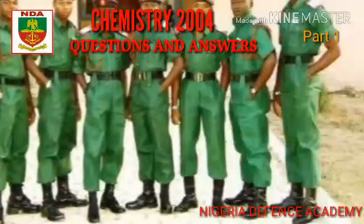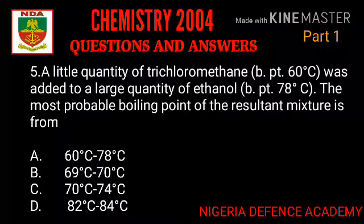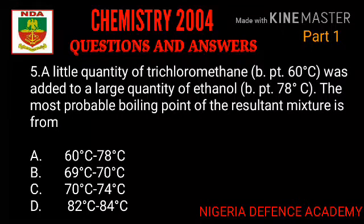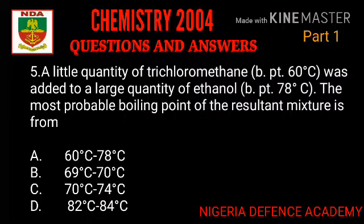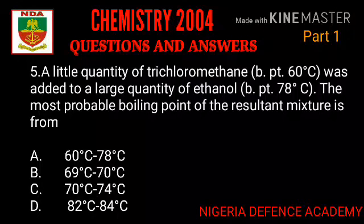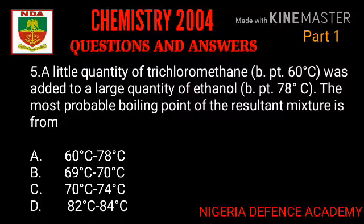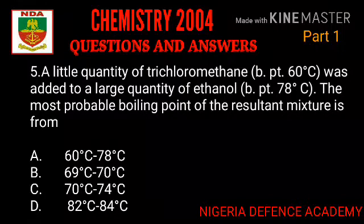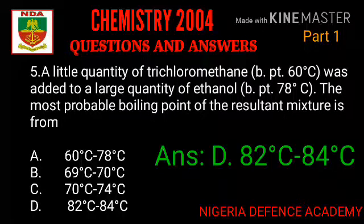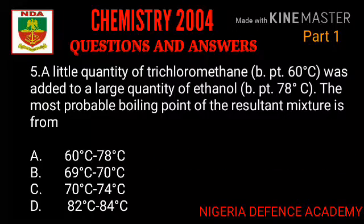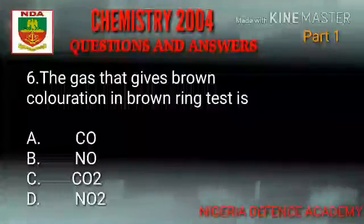The next question: a small quantity of trichloromethane with a boiling point of 60°C was added to a large quantity of ethanol with a boiling point of 78°C. The most probable boiling point of the resulting mixture ranges from: Option A: 60°C to 78°C. Option B: 69°C to 70°C. Option C: 70°C to 74°C. Option D: 82°C to 84°C. The answer is option D — 82°C to 84°C.